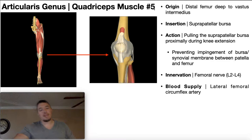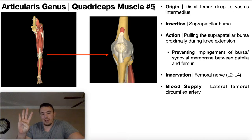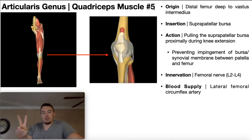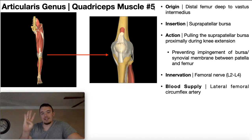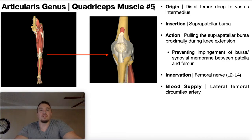Historically, when you take undergraduate anatomy and physiology, you learn that there are four quadriceps muscles — the knee extensors. You've got rectus femoris, which doubles as a hip flexor, vastus intermedius deep to that, and vastus lateralis and vastus medialis. But it turns out there is a fifth quadriceps muscle present in most individuals.